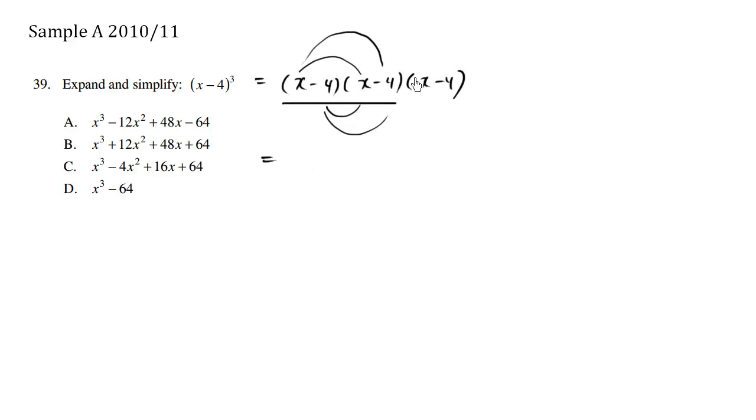So just focusing on the first two factors, I'm going to solve for this within the square brackets times x minus 4. So using FOIL, we have x squared. We have the outside, it's going to be negative 4 times x is negative 4x.